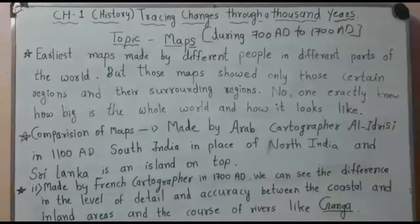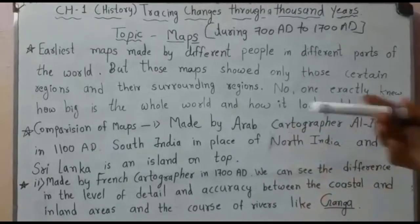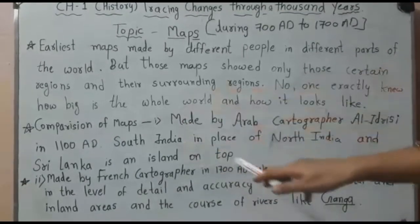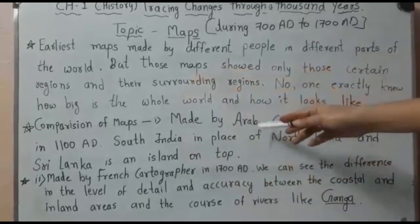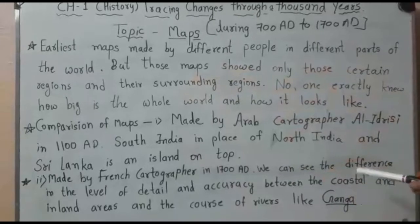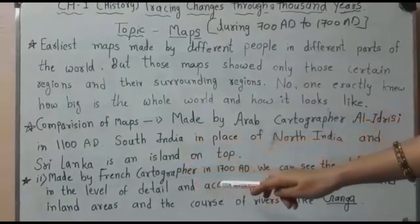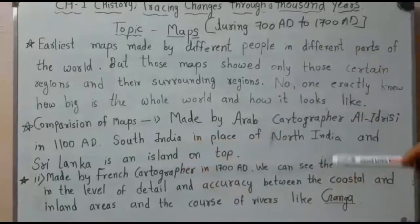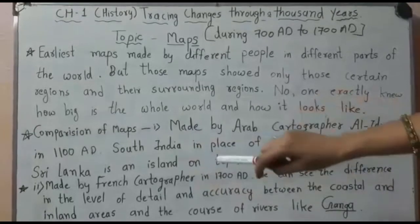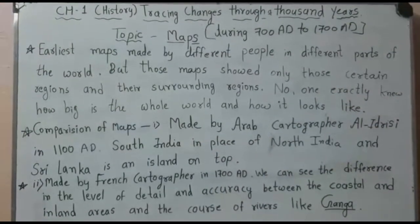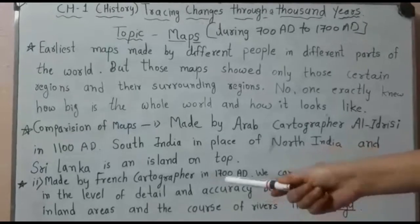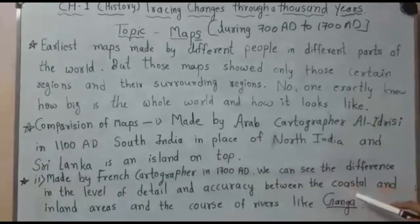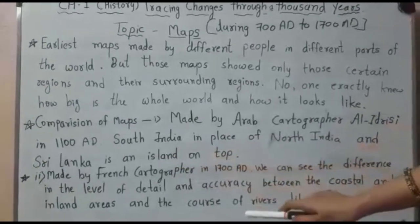The second map was made by a French cartographer in 1700 AD — that means there is a 600-year difference between the Arab map and the French map. You can see in your textbook that there is a difference in the level of detail and accuracy, including differences in coastal and inland areas and the course of rivers like the Ganga.